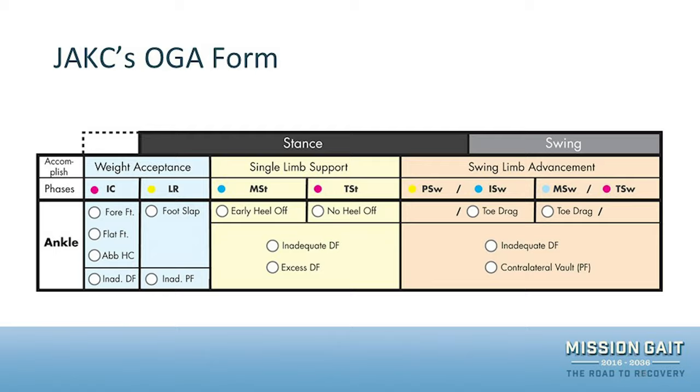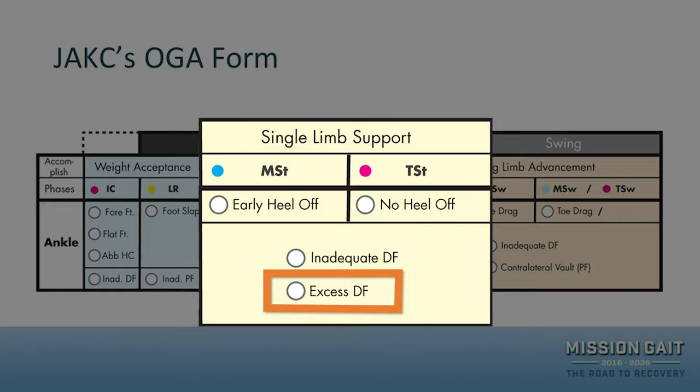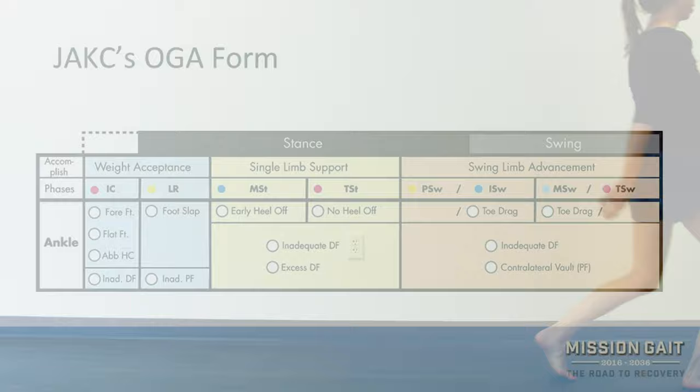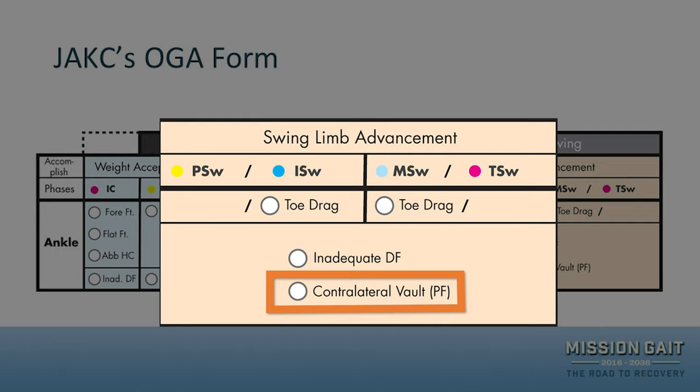In the single limb support task, the biggest thing to note is excessive dorsiflexion, which is fairly common and occurs alongside a couple of other deviations we'll see. Moving into swing limb advancement, the key deviation to discuss is the contralateral vault.